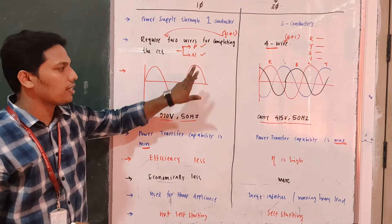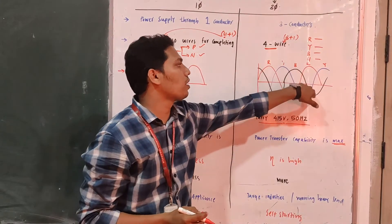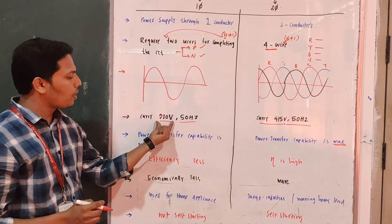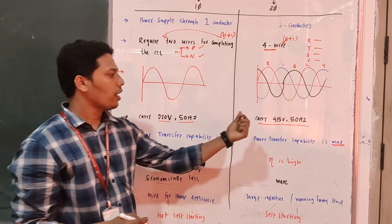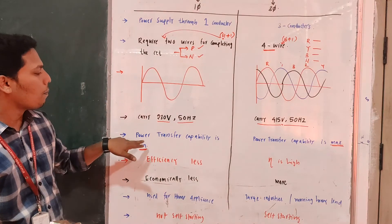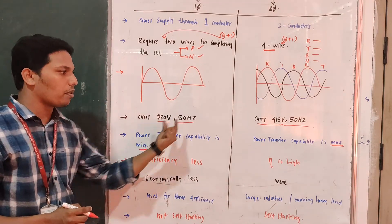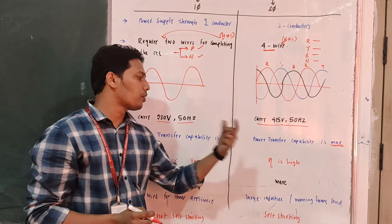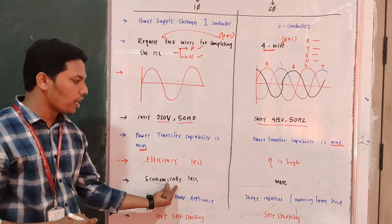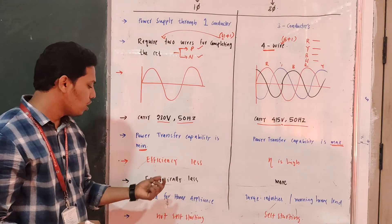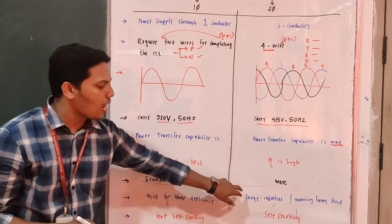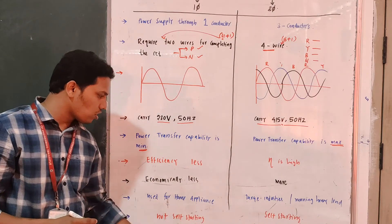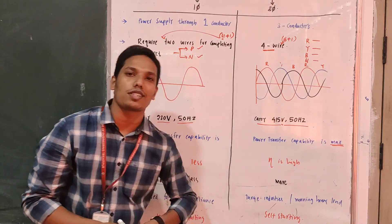The representation for single phase is a single sine wave; for three phase there are three sine waves. The rating of a single phase supply is 230 volts, 50 Hz; for three phase it is 415 volts, 50 Hz. Power transfer capability is minimum for single phase, maximum for three phase. Efficiency is less for single phase, maximum for three phase. Economically less for single phase, economically more for three phase. Used for home appliances versus large industry heavy load applications. Single phase motors are not self-starting; three phase motors are self-starting.